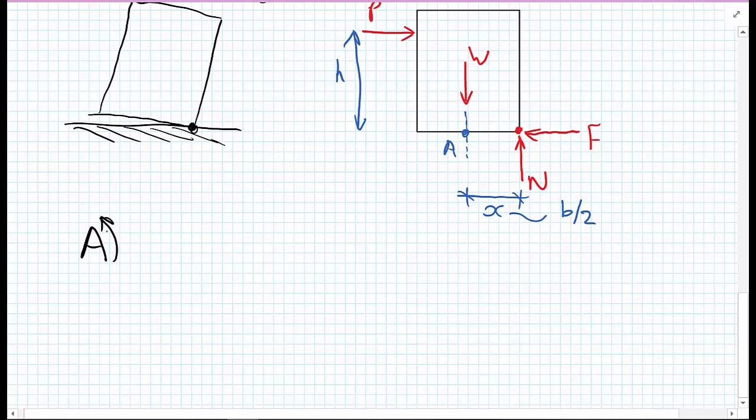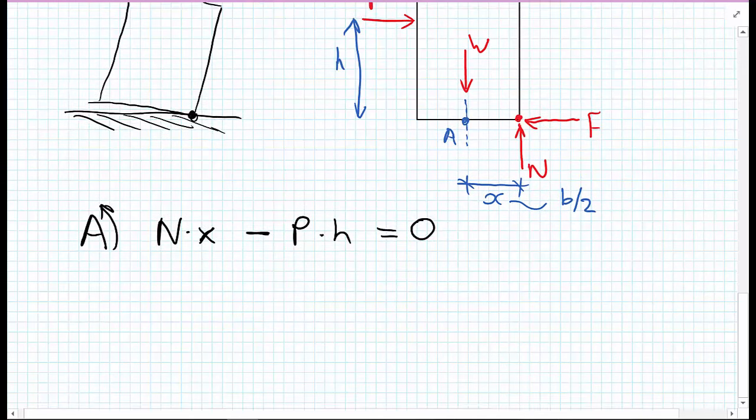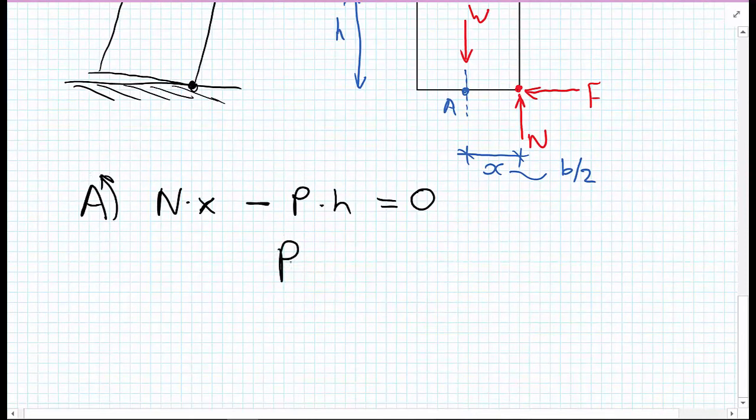Taking moments about the point A, we have N times X going in the anti-clockwise direction. Going in the clockwise direction then, so negative, we have P multiplied by H. And for equilibrium, that is equal to zero. We're going to rearrange this equation, and we get P equals NX divided by H.